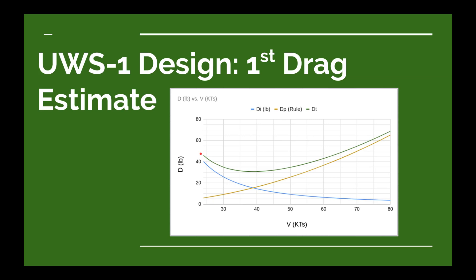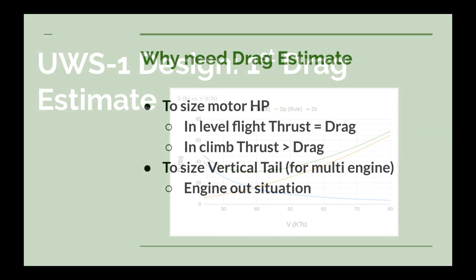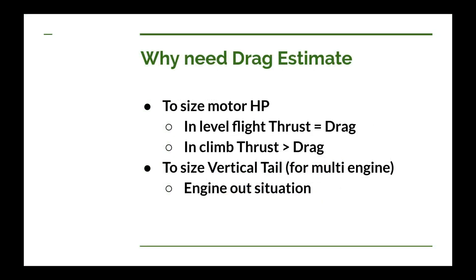The main reason you're going to want to know the drag for the airplane is to know if the motor you've chosen is big enough, or vice versa — you figure out the drag and then select the motor based on how much drag your airplane has. In straight and level flight, not accelerating or decelerating, the thrust of your motor is going to equal the drag on the airplane. So once you've figured out the drag, you can figure out the thrust, and once you know the thrust, you can figure out the horsepower.